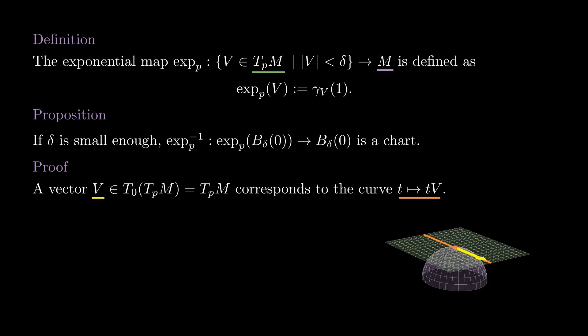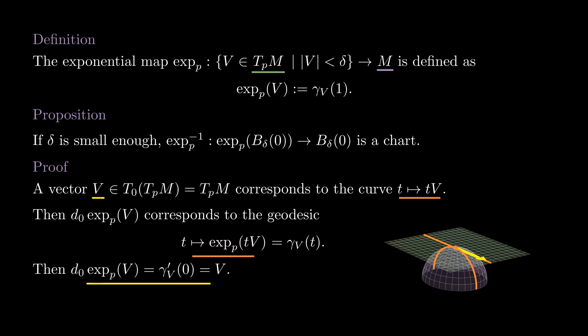For each v in this tangent space, we compute the derivative of the exponential map applied to v. This corresponds to the curve given by the exponential map applied to the line Tv. By the homogeneity lemma, this is nothing more than gamma v. The velocity of gamma v at time zero is precisely v, so the derivative of the exponential map is the identity. In particular, it is invertible, and by the inverse function theorem, after maybe shrinking the domain, the exponential map is going to be a diffeomorphism near zero.